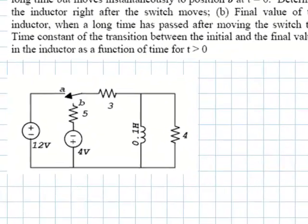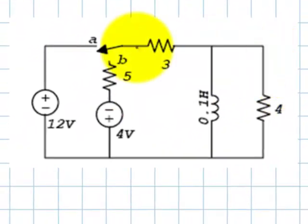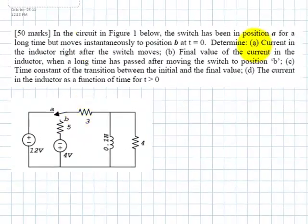In the circuit in the figure below, the switch has been in position A for a very long time, but moves instantaneously to position B at t equals zero. The first question is determine what is the current in the inductor right after the switch moves, so that is at t equal zero plus.